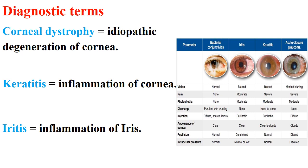Principal symptoms of each disease: bacterial conjunctivitis, iritis, keratitis, and acute closure glaucoma. Keratitis means inflammation of the cornea, while iritis means inflammation of the iris.